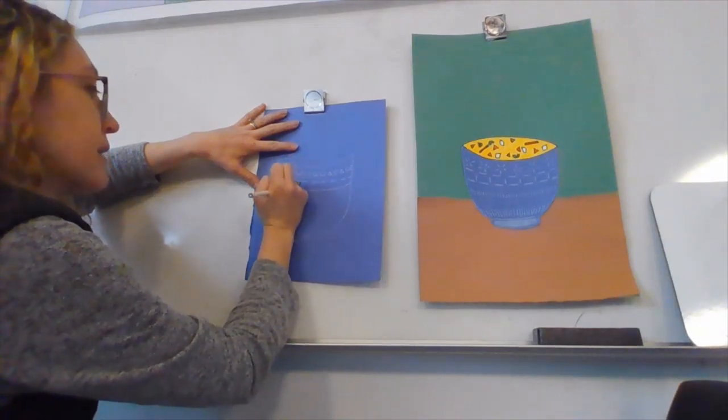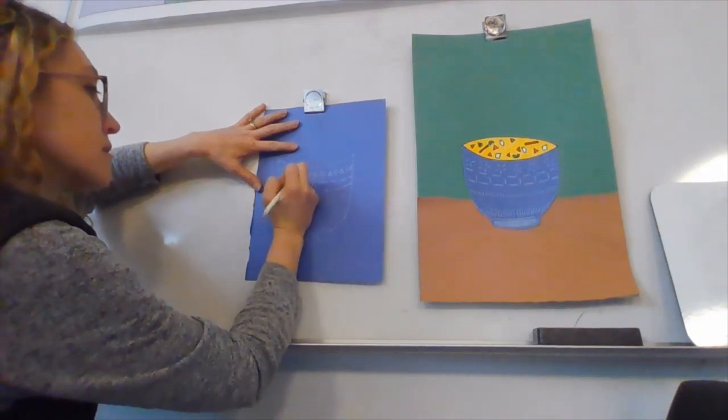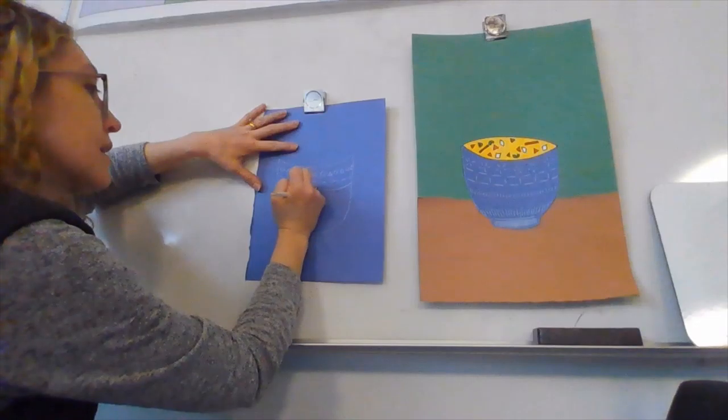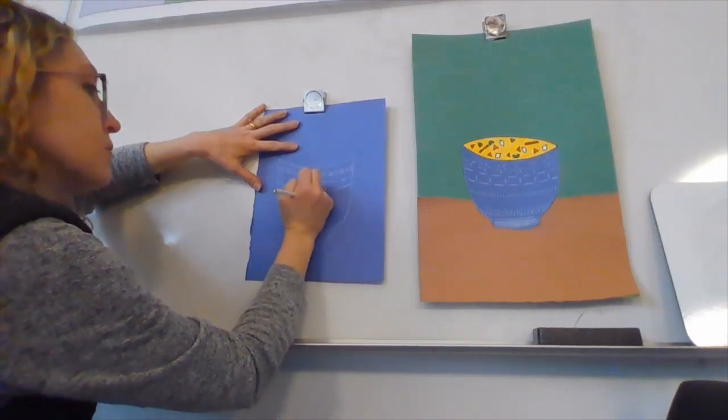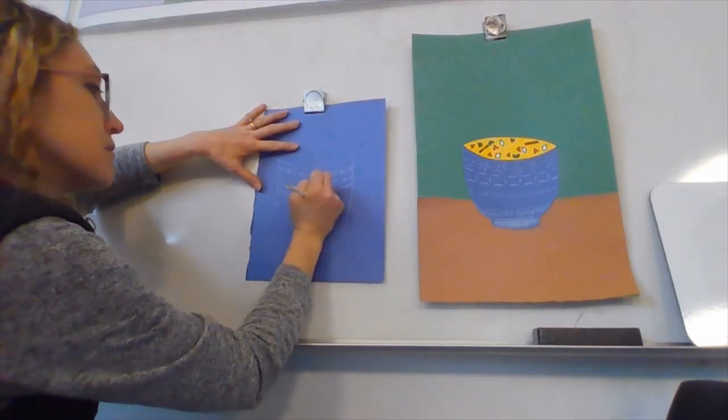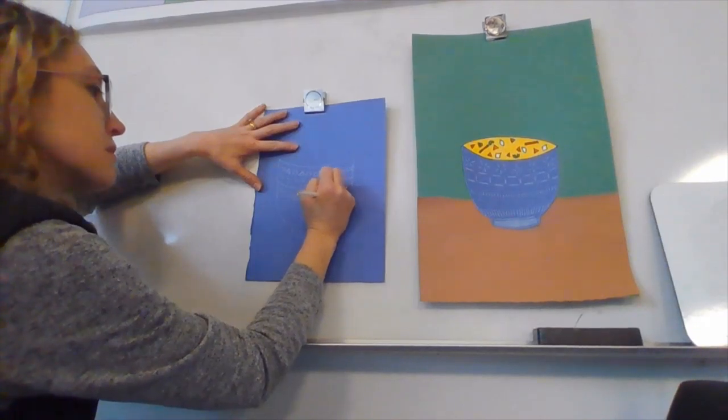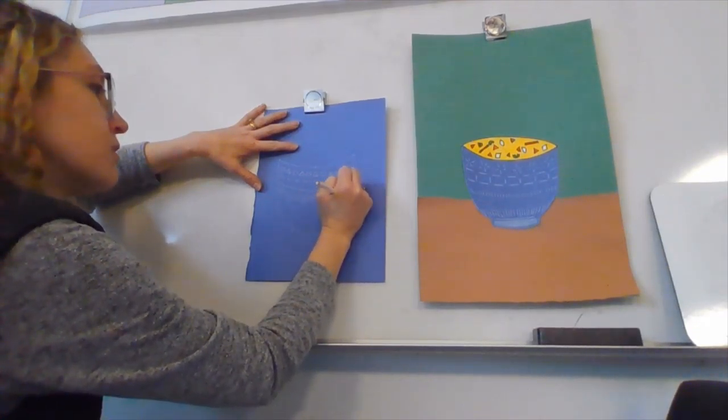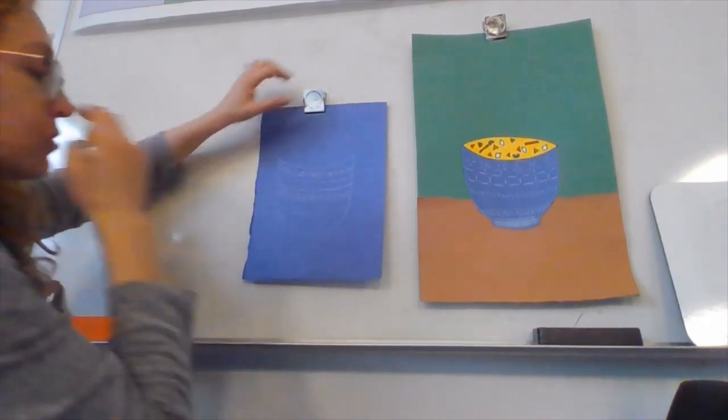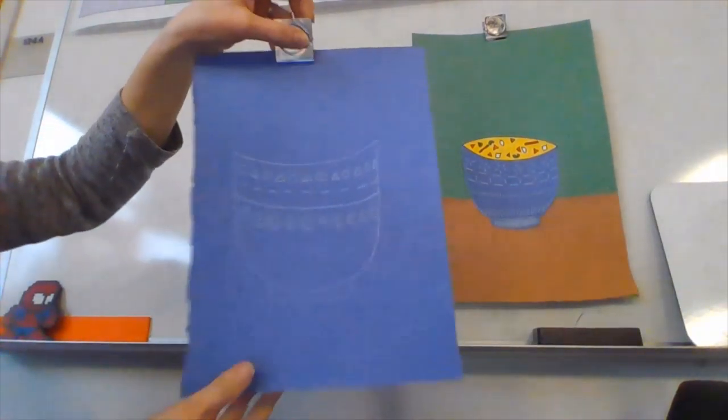You could do little spirals. Maybe they connect to each other or maybe they don't. There are some spirals. It's really fun to make the same shape over and over because sometimes it changes as you're making it. It looks a little bit different by the time I'm getting to the last one.